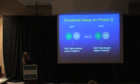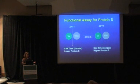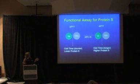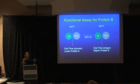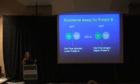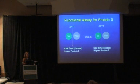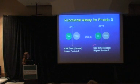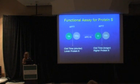A longer clot time in the assay is associated with a higher protein S. So anything that makes your clot time longer will make it look like your protein S is higher. High levels of heparin, direct thrombin inhibitors, and lupus anticoagulants can mask a protein S deficiency and make it look like your protein S is high.